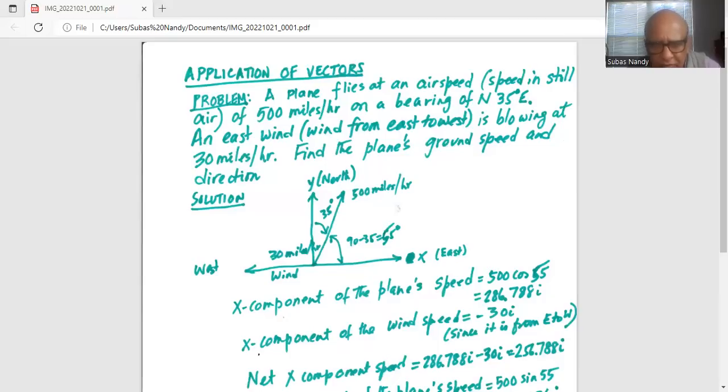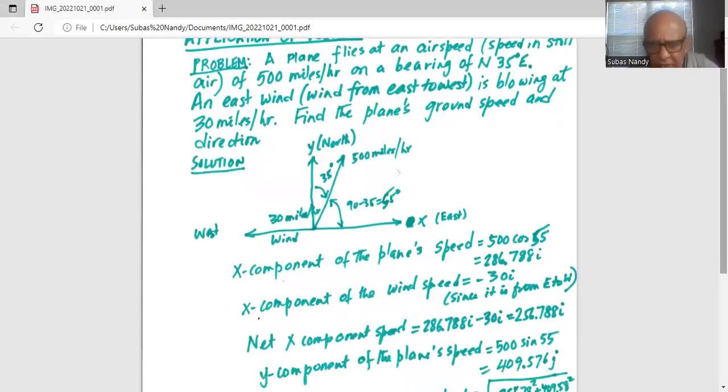Now, x component of the wind speed is minus 30i because it flows from east to west in the opposite direction. So net x component speed is 286.788i minus 30i, which is 256.788i.